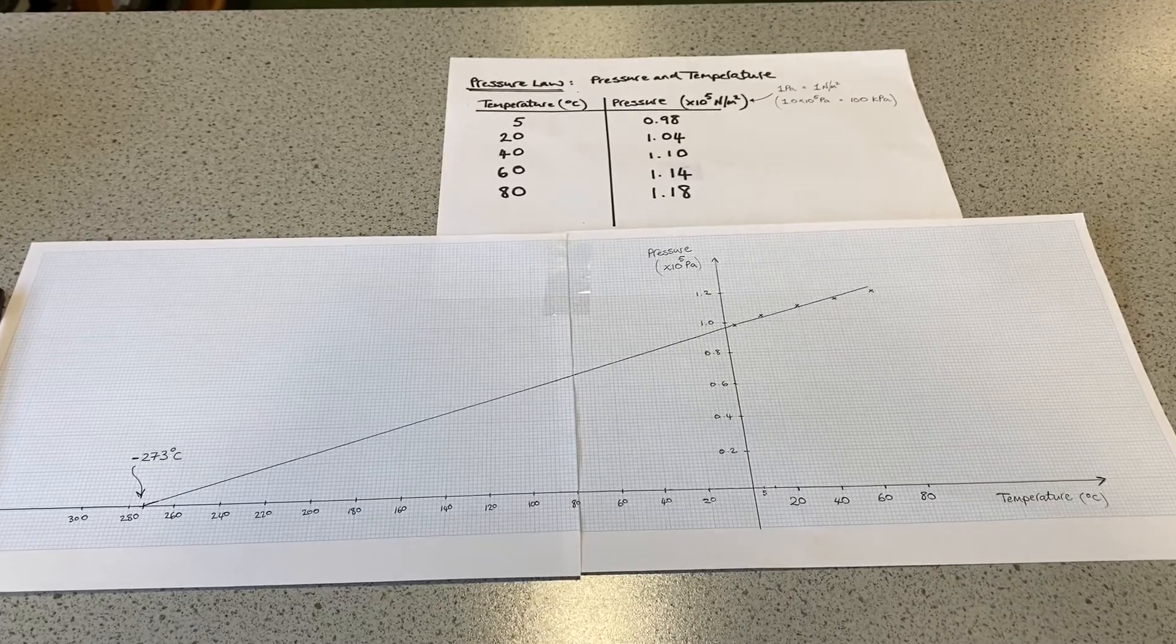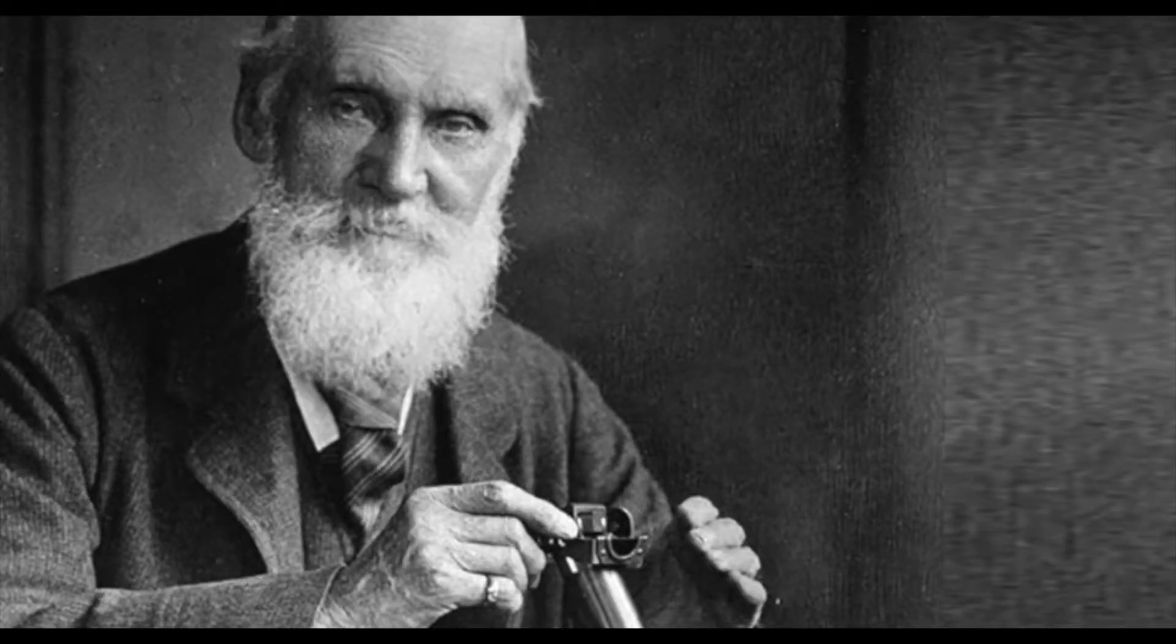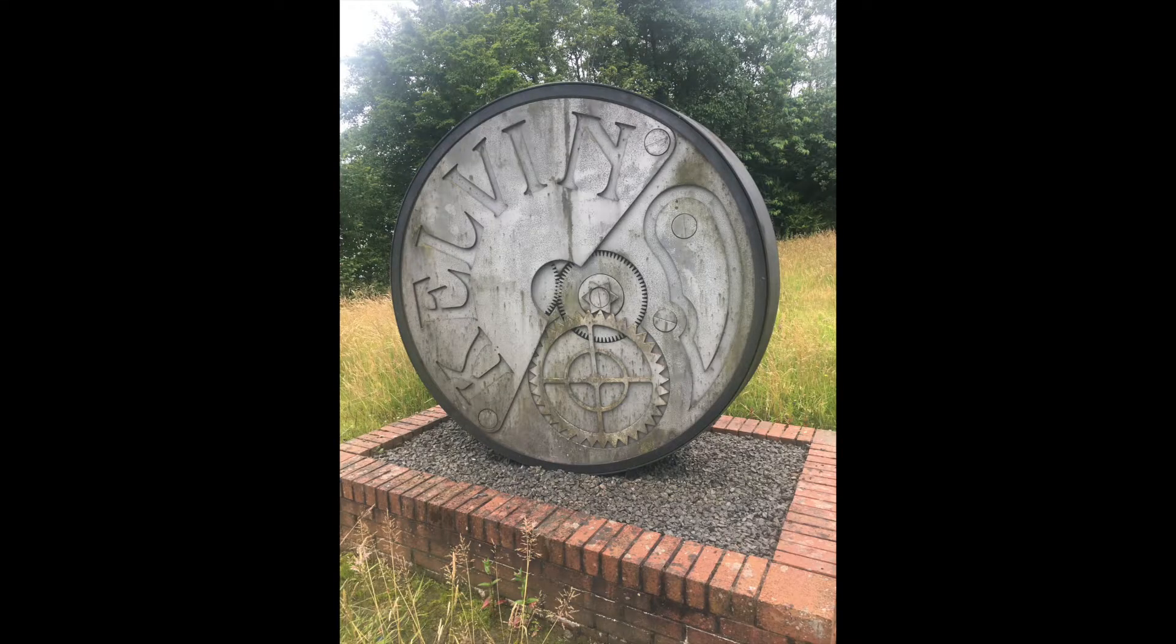And the temperature scale that starts at absolute zero is called the Kelvin scale, which is named after this fine looking chap, William Thompson or Lord Kelvin, who did most of his work up at Glasgow University. In fact, there's an industrial estate named after him in East Kilbride, the Kelvin.